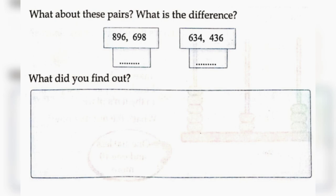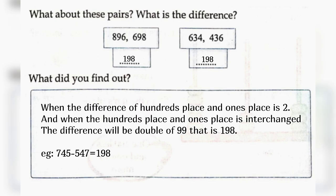What about these pairs? What is the difference? 896 minus 698 is equal to 198. 634 minus 436 is equal to 198. What did you find out? When the difference of 100's place and 1's place is 2, and when the 100's place and 1's place is interchanged, the difference will be double of 99. That is 198.